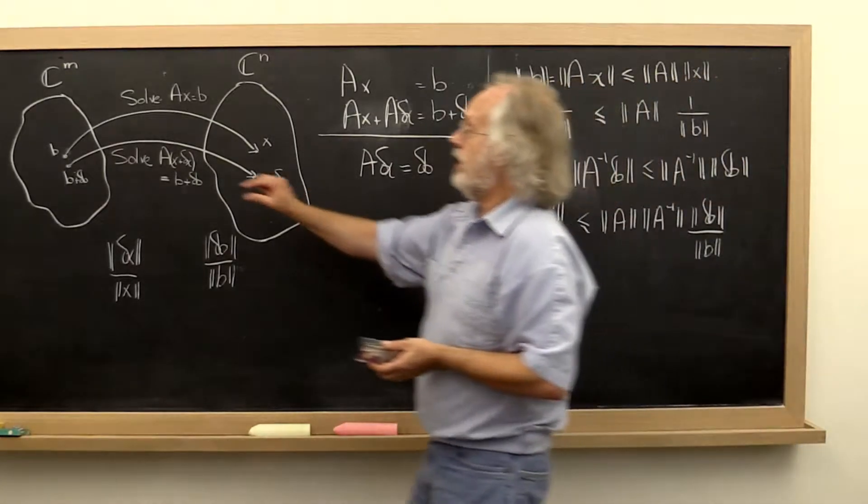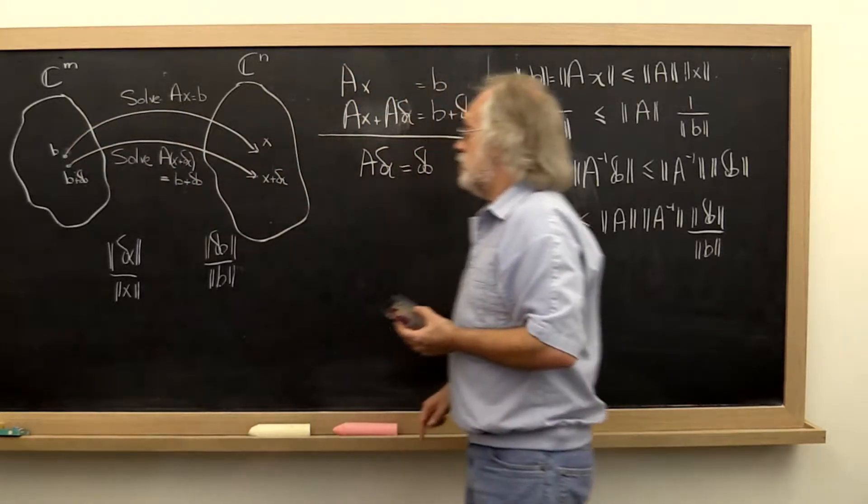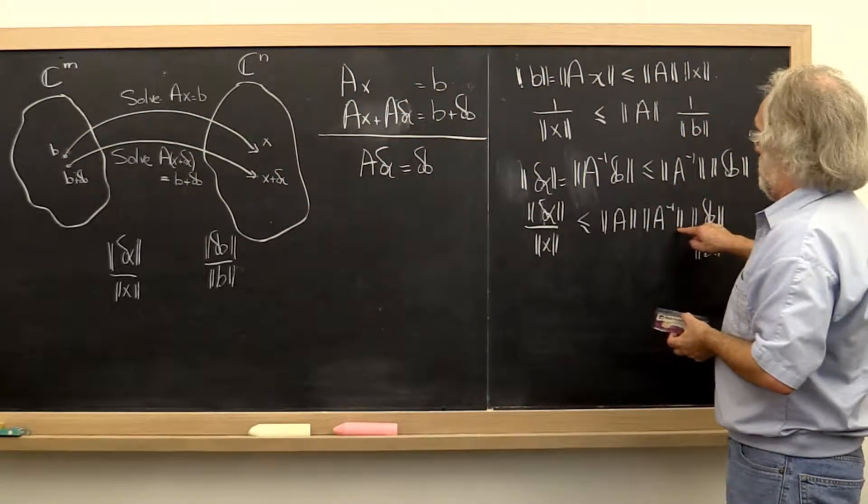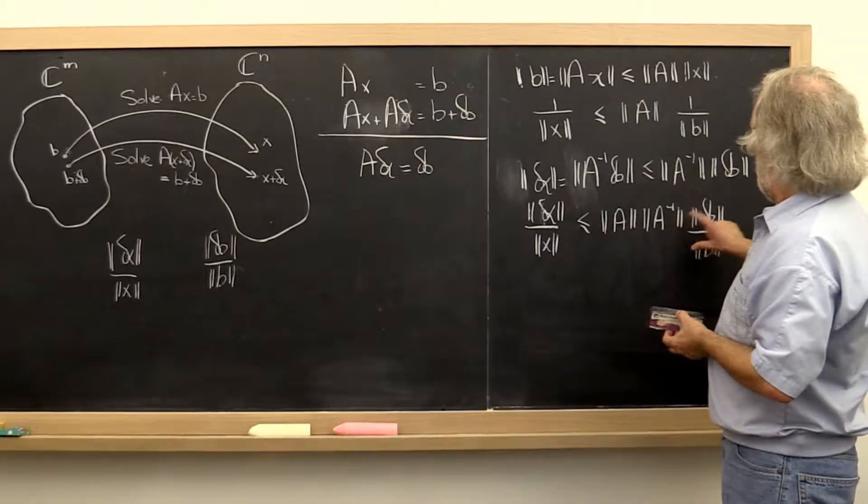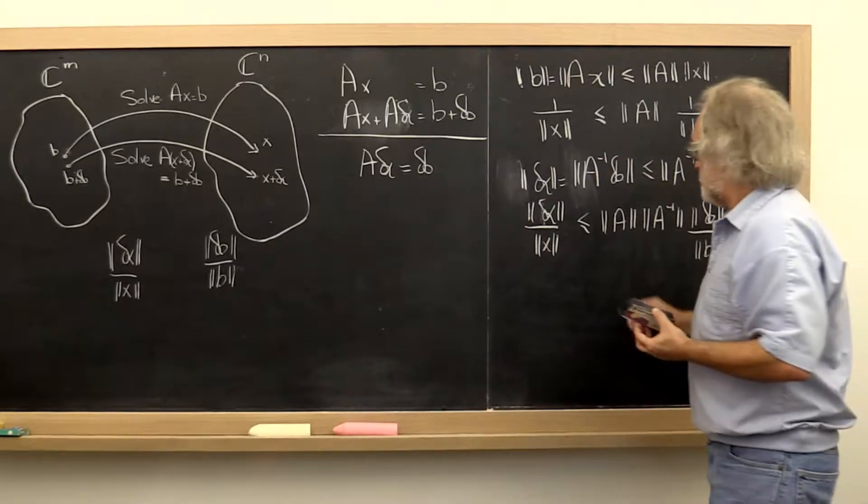The small error in B can be amplified no more than this quantity right here, which we call the condition number of matrix A.